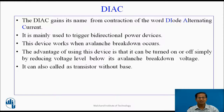The Diac gains its name from contraction of the word diode alternating current. It is mainly used to trigger bidirectional power devices like Triac and SBS. This device works when avalanche breakdown occurs. The advantage of using this device is that it can be turned on or off simply by reducing the voltage level below its avalanche breakdown voltage. It can also be called as a transistor without base.